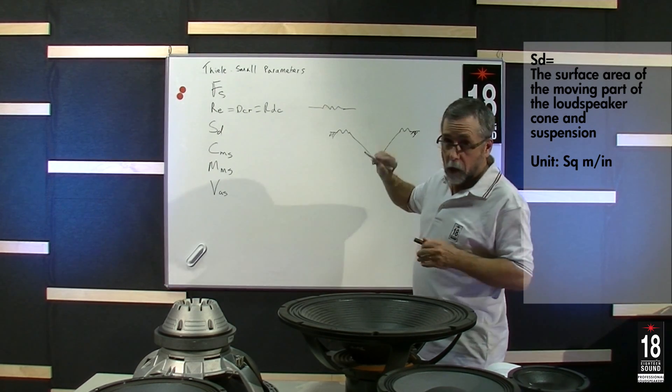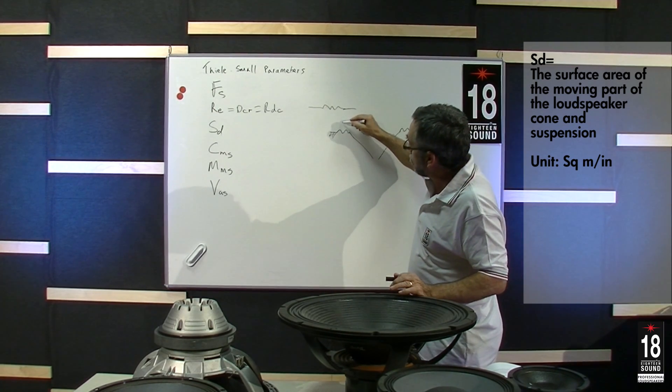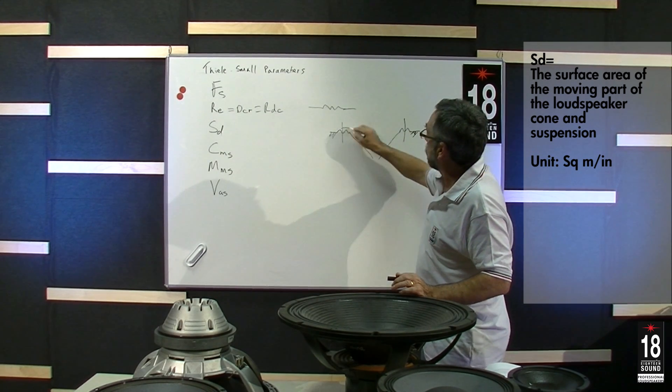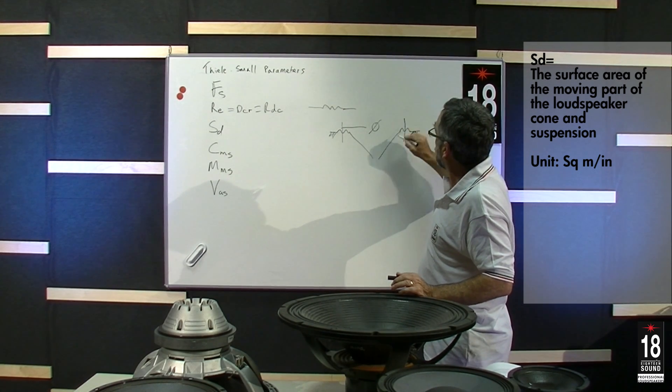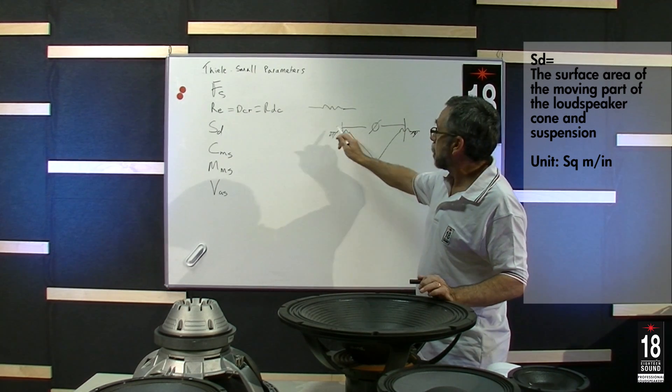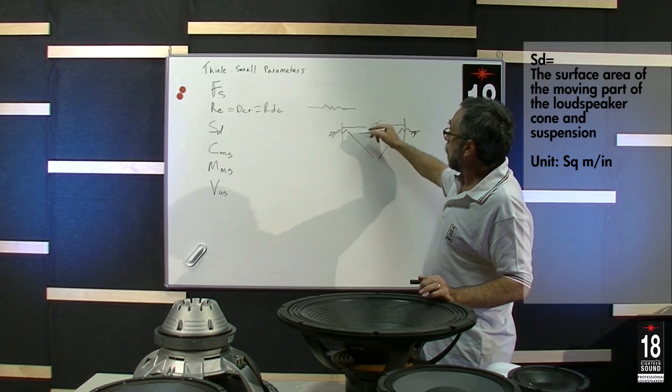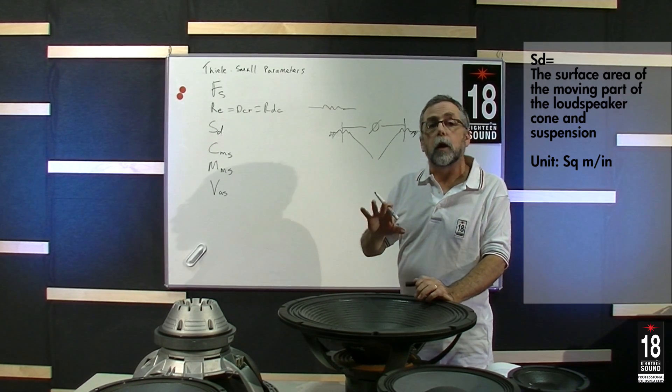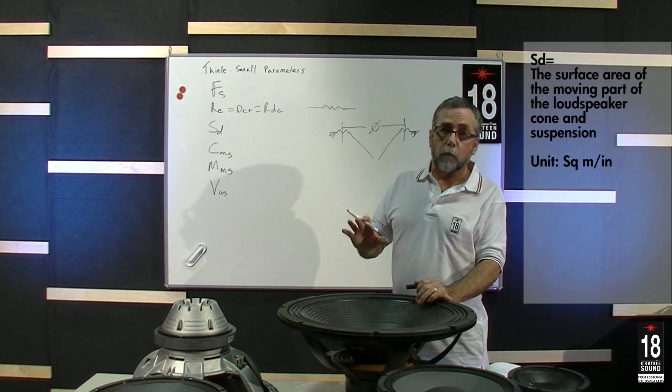And to calculate SD, we will typically take half of the cross-section diameter, by half I mean half of the surround, not all of the surround, and the area of the cone, calculate this for the surface area that is moving.